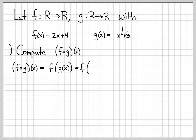We can just write that as f, and we need to replace the argument of the function f with g of x. Well, what is g of x? For this problem, g of x is 1 over x squared plus 3. So we just need to evaluate the function f at the point 1 over x squared plus 3. And what does that mean?